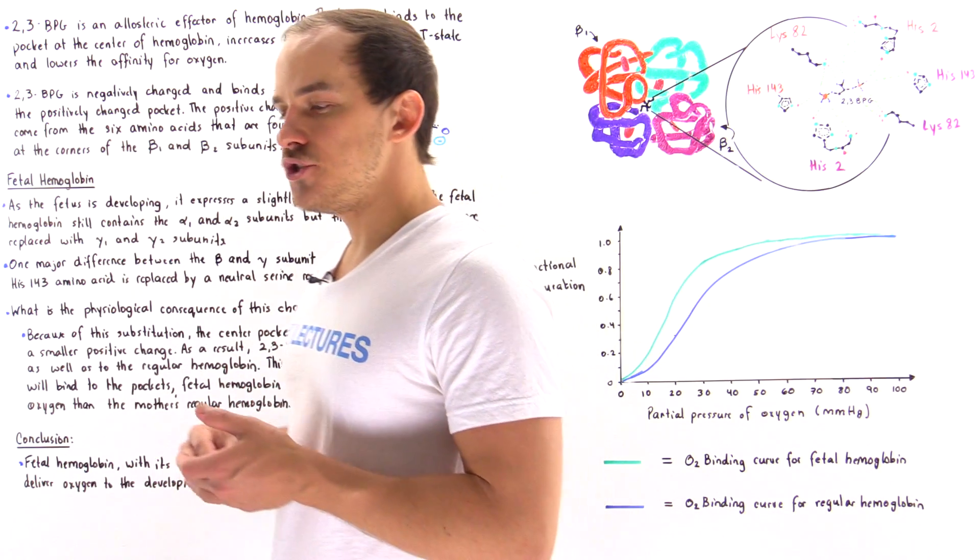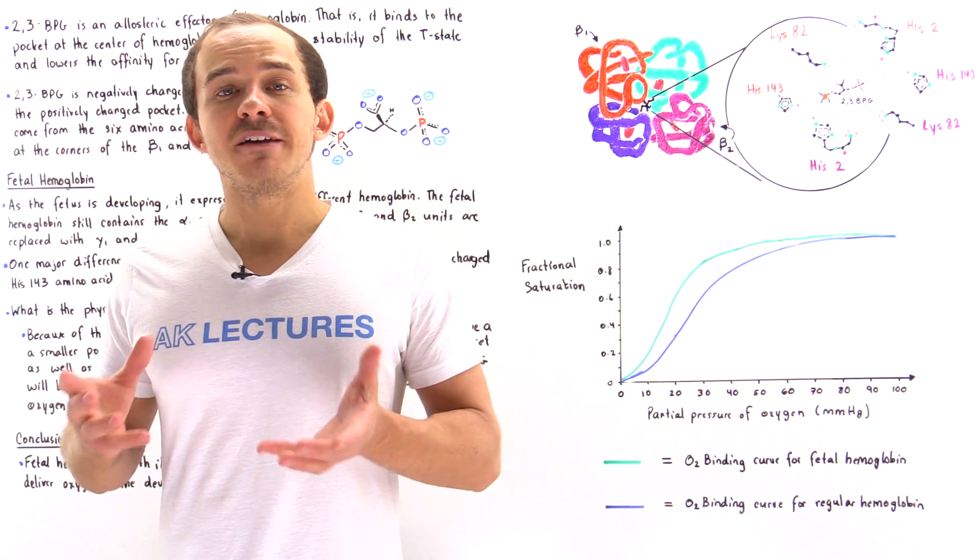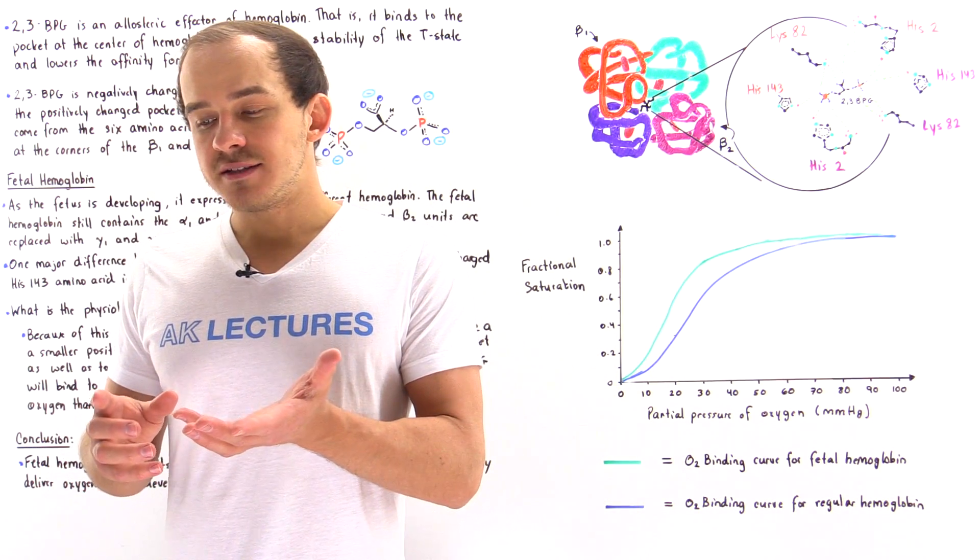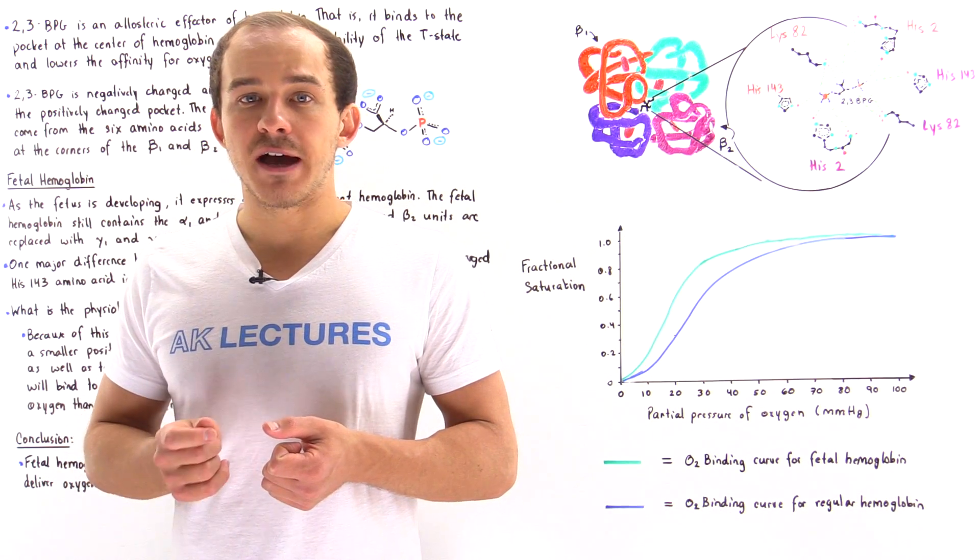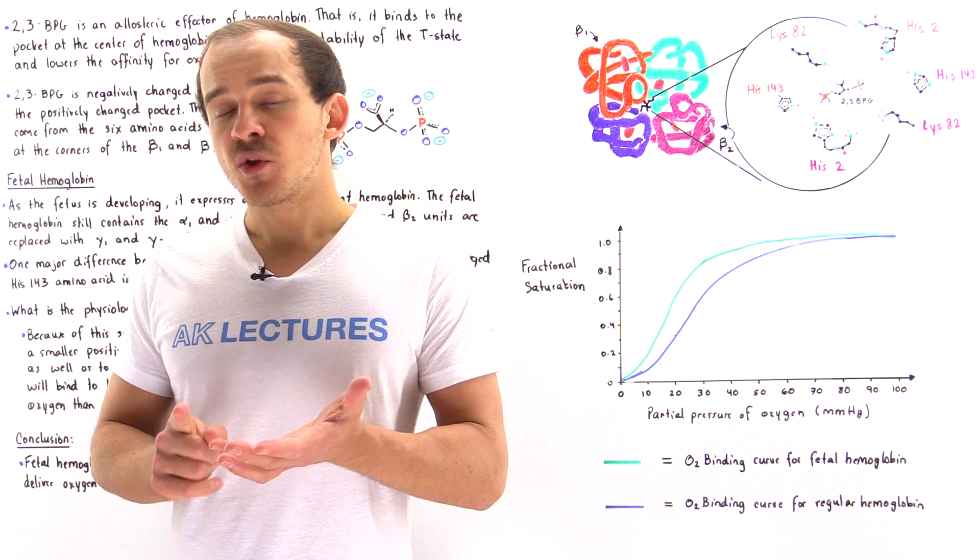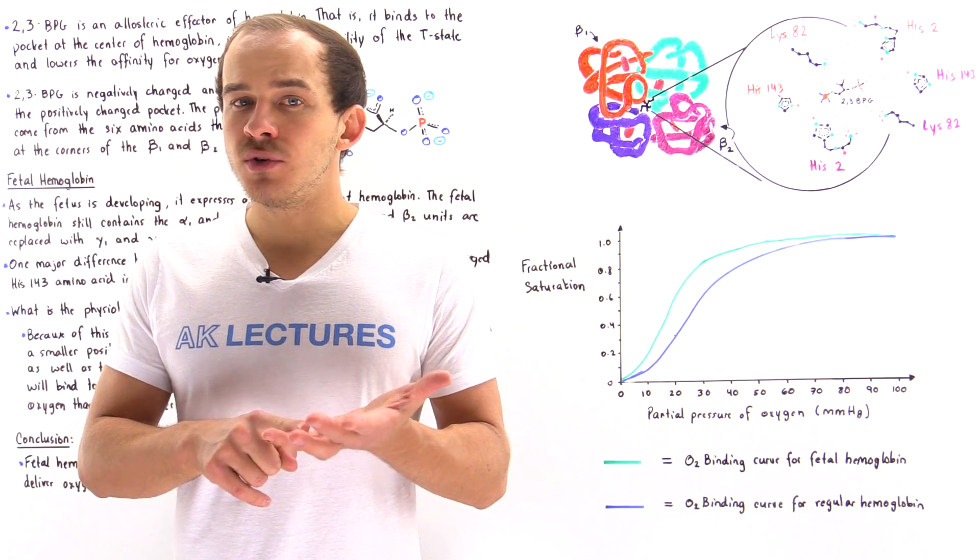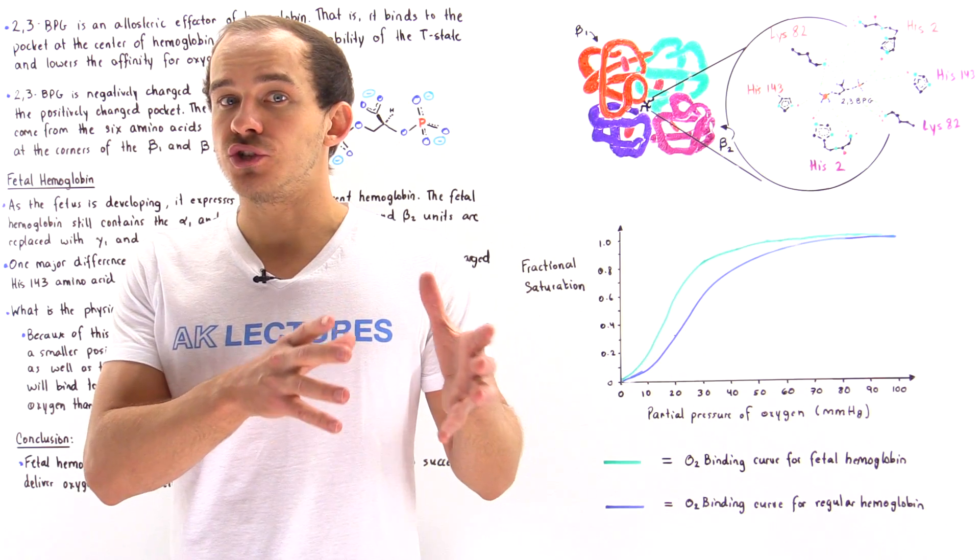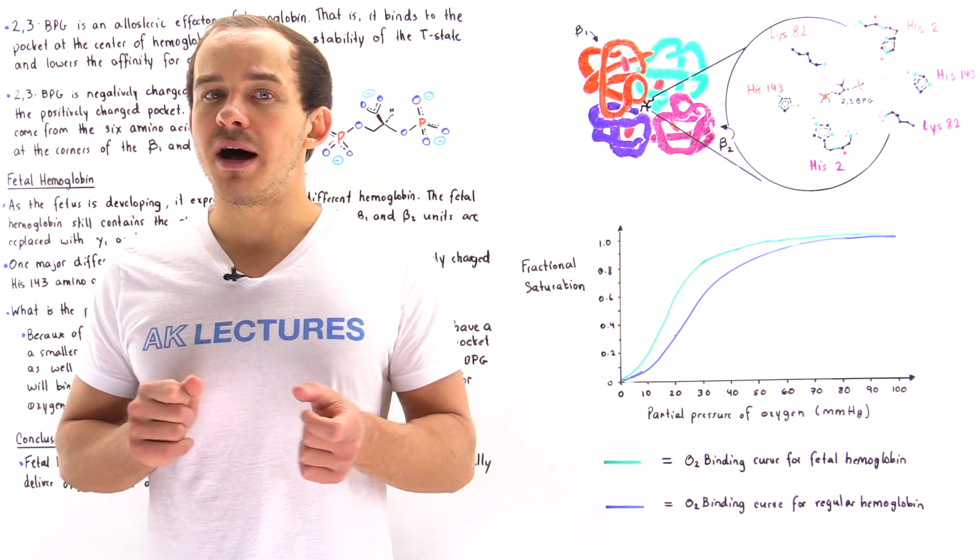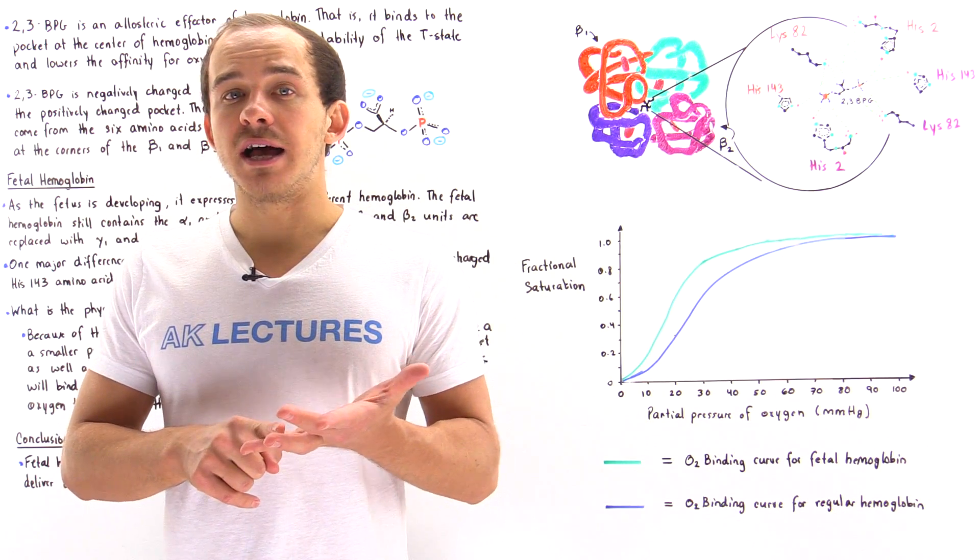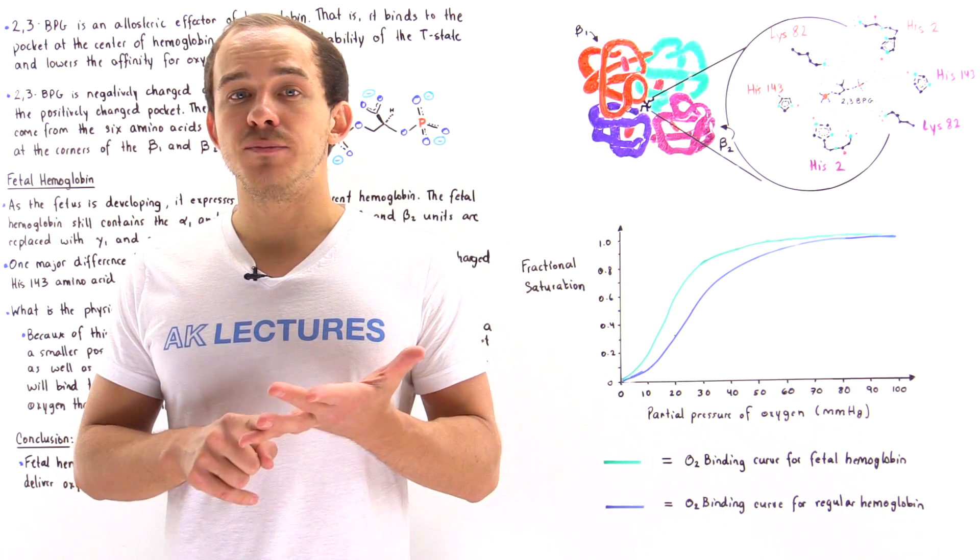So 2,3-BPG, or simply 2,3-biphosphoglycerate, is this biological molecule that acts as an allosteric effector of hemoglobin. It binds onto the hemoglobin molecule at a special location that is not the same location that oxygen binds to, and it stabilizes the T-state of that hemoglobin.